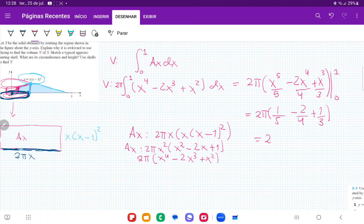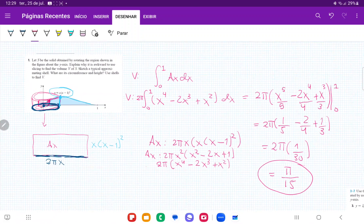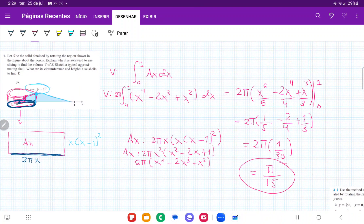Which is equal to, let's see, 2π. Let me put this in my calculator. 1/5 - 1/2, and then plus 1 divided by 3. This gives us 1/30, and therefore my volume is equal to π, and then 2/30 gives me π/15. That's what I get when I revolve this area about the y-axis.